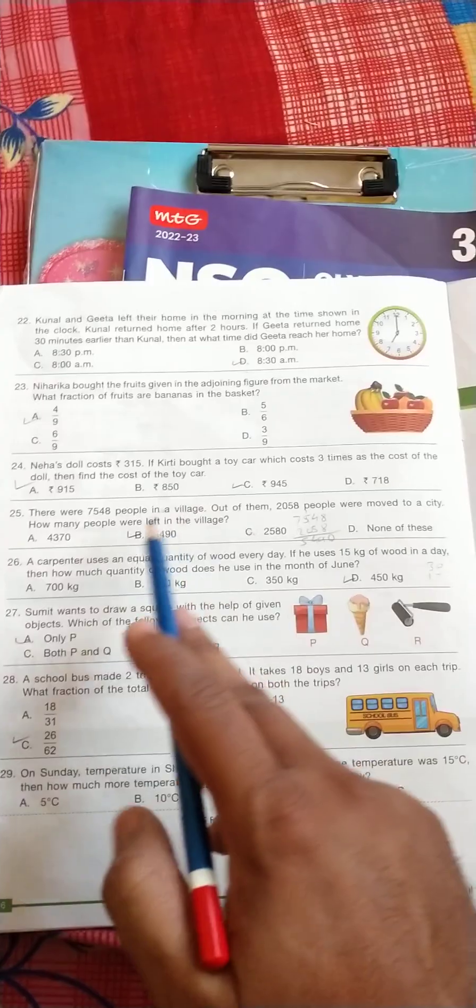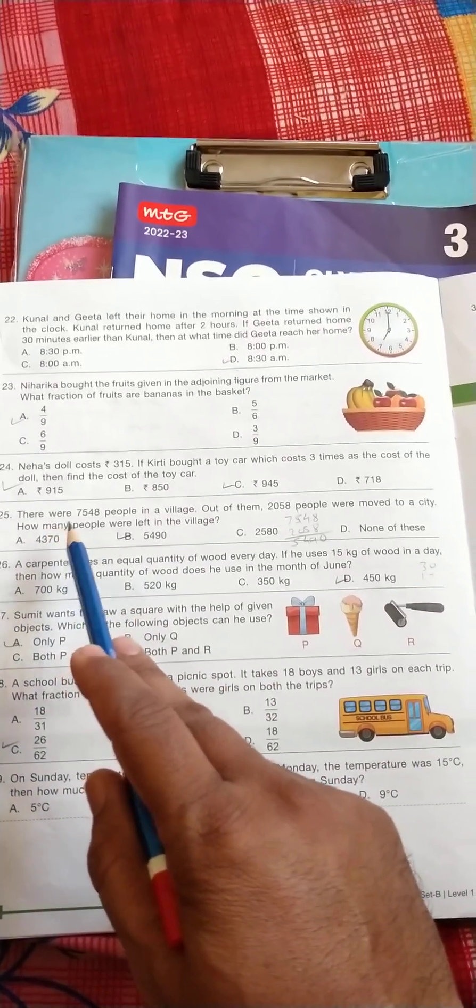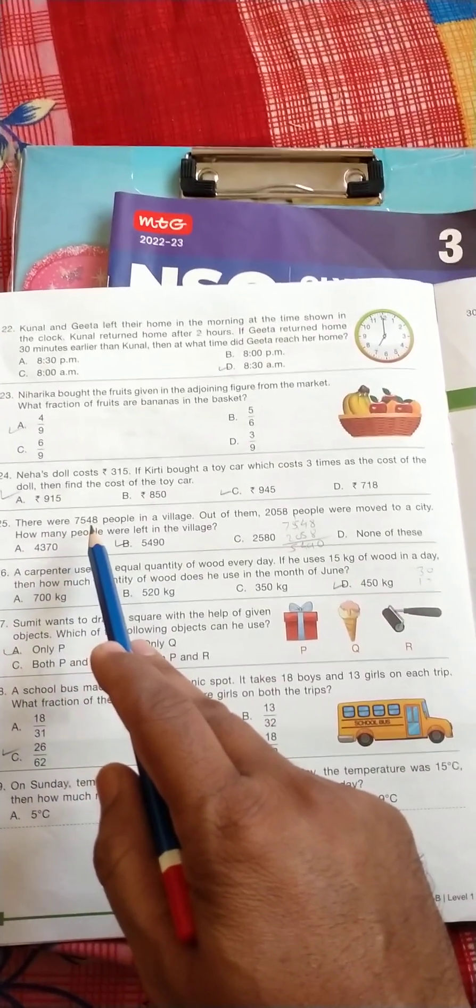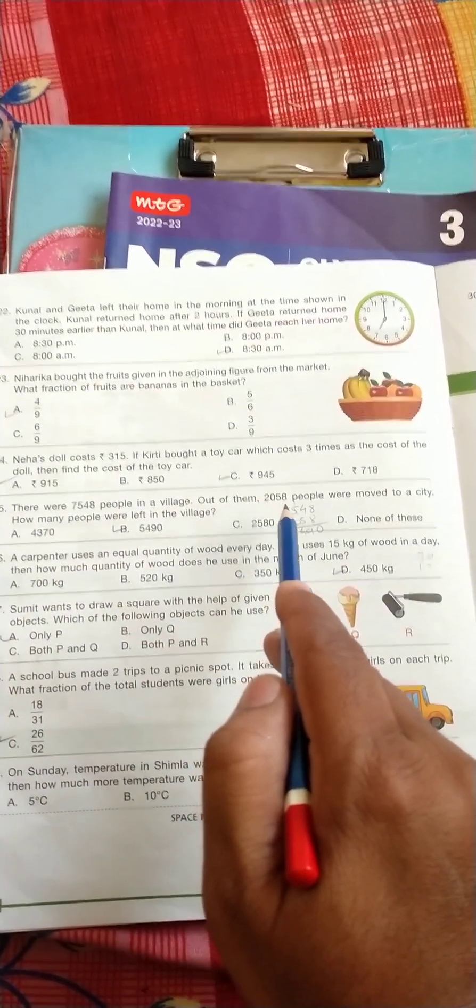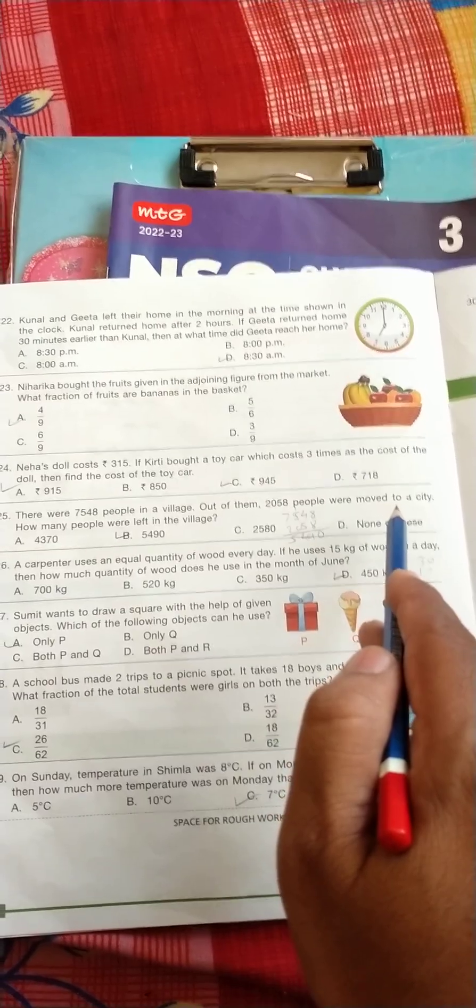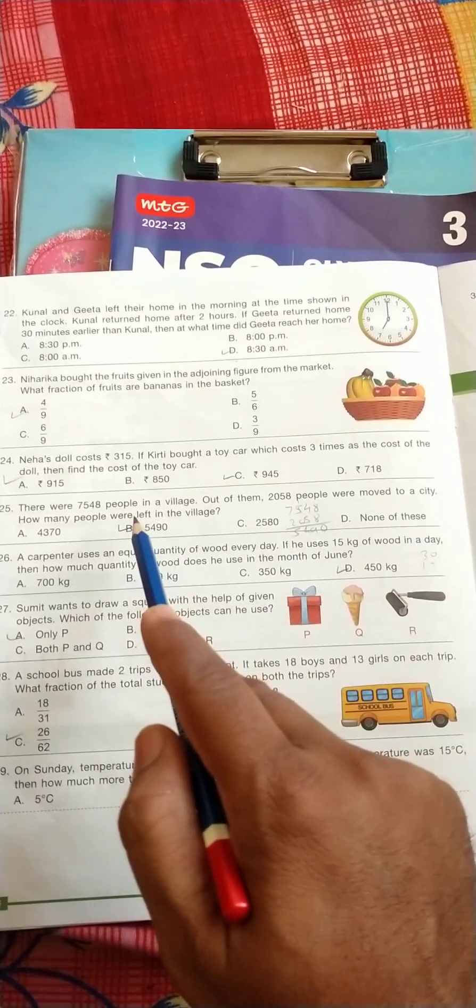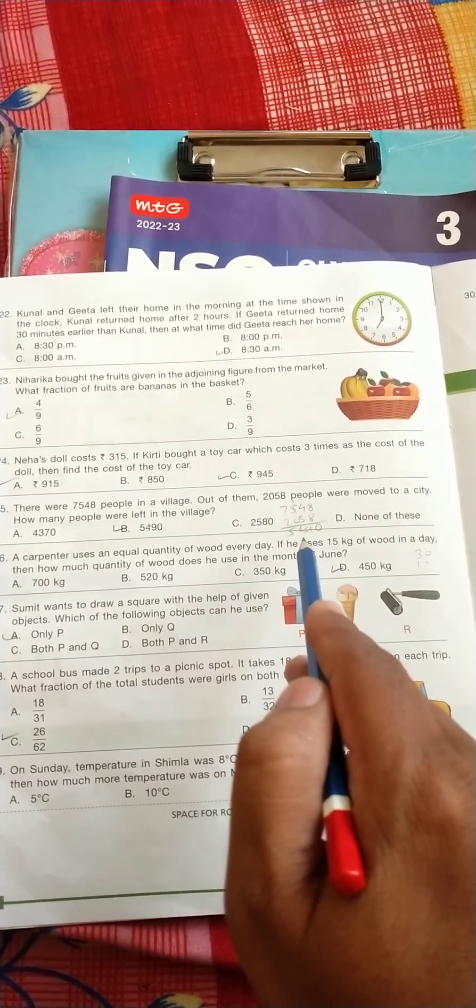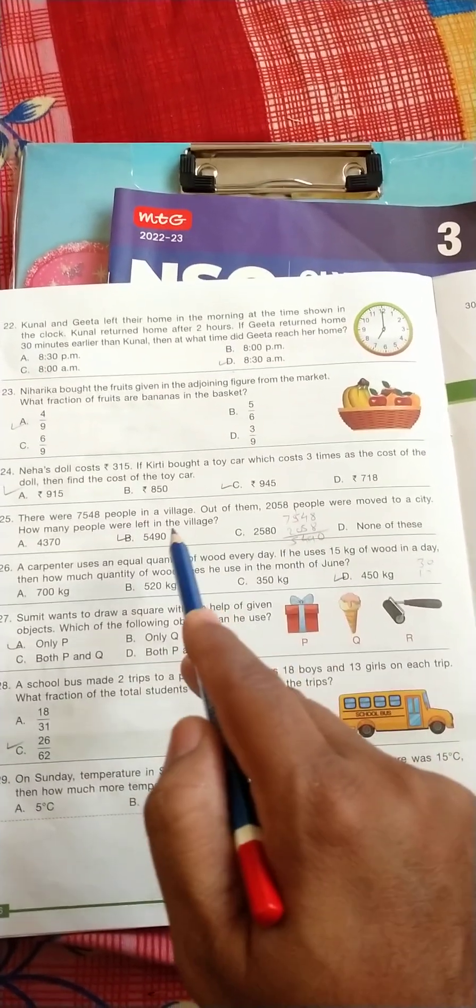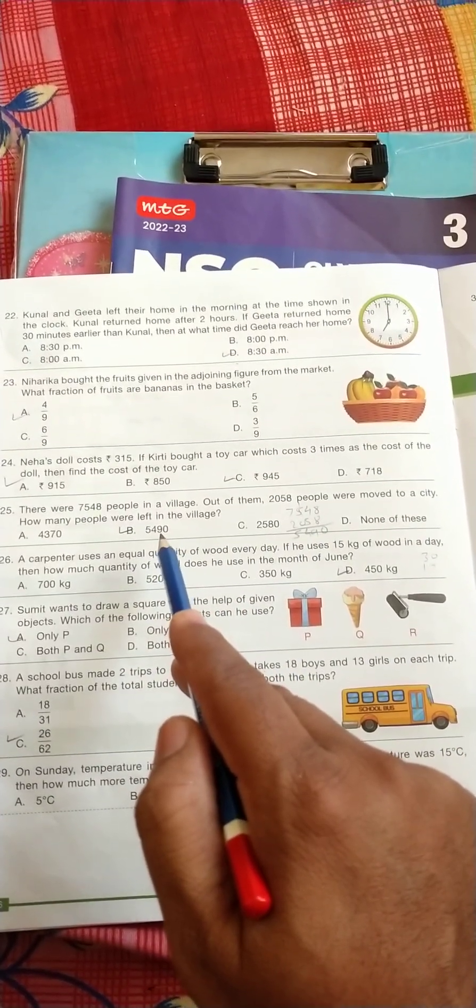Question number 25: there were 7,548 people in a village. Out of them 2,058 peoples were moved to a city. How many peoples were left in the village? So it's simple subtraction. So the correct answer is 5490.